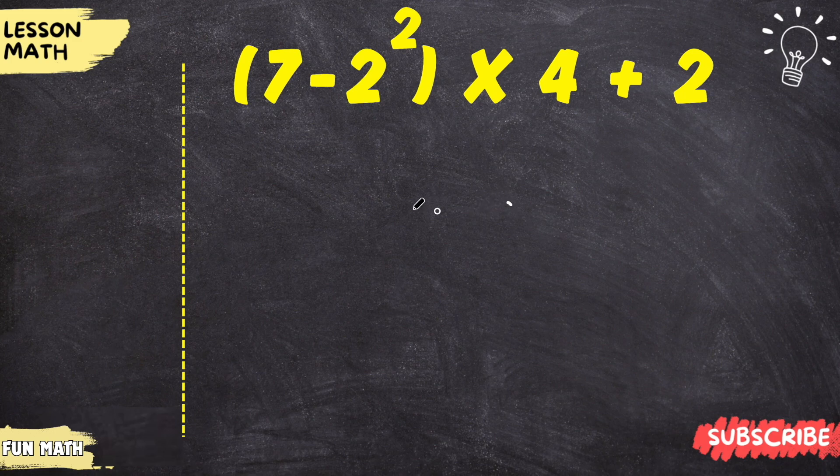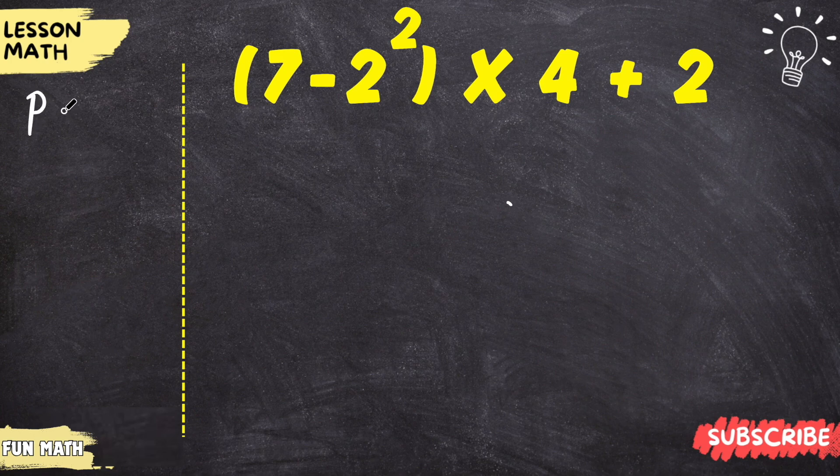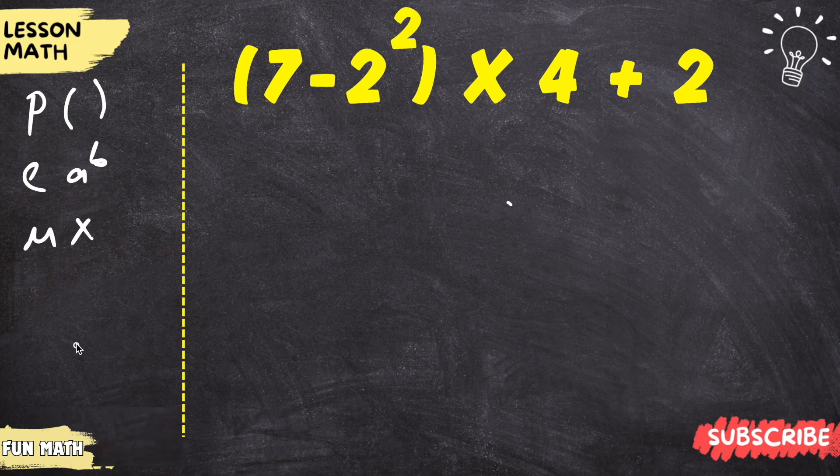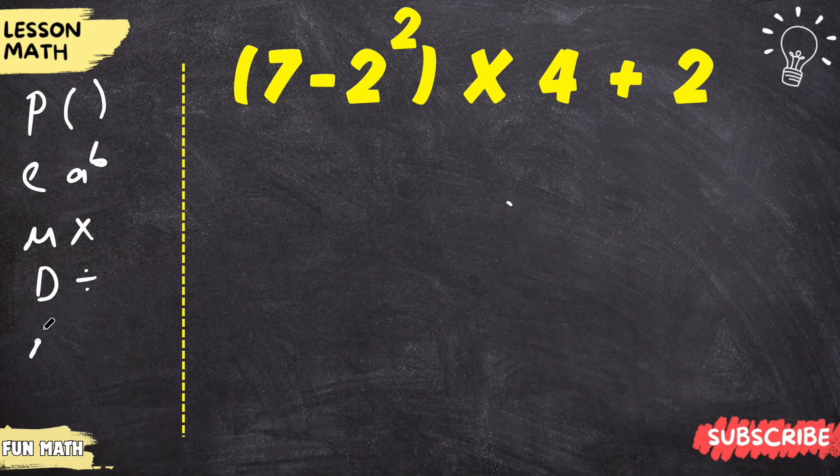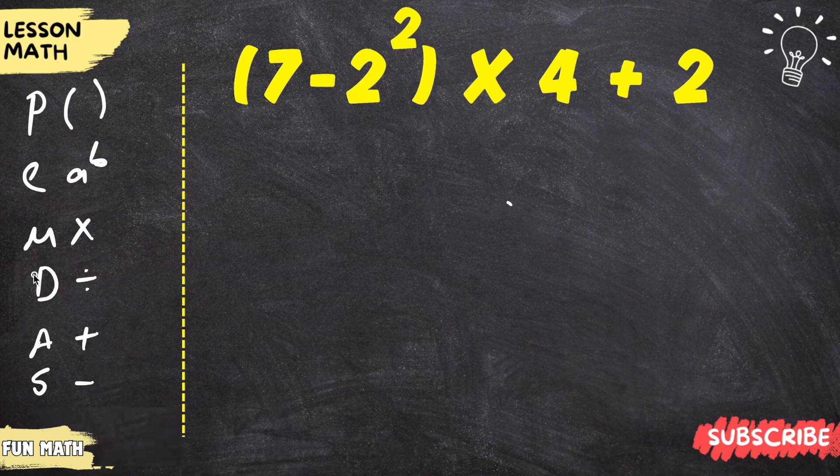The way to solve this is to pay attention to the order of operations. The abbreviation for the order of operations rules is PEMDAS. P stands for parentheses. A stands for exponents. M stands for multiplication. D stands for division. A stands for addition. S stands for subtraction. There's another feature here.